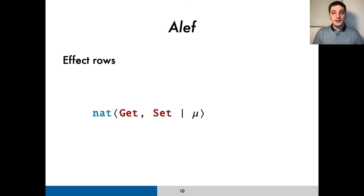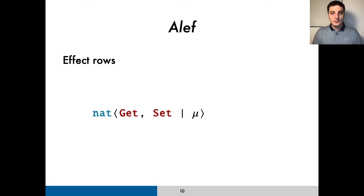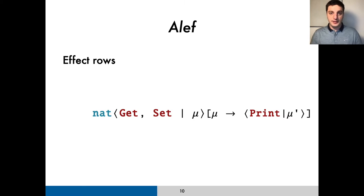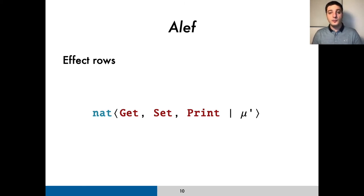For example, the type of a computation returning natural numbers that may invoke the state operations is the following. Here, mu is an effect variable that represents the ambient effects. Each effect row ends in an effect variable that can be instantiated in order to add operations to the row. For instance, if we wanted to add the print operation to this type row, we would need to apply an instantiation like the following one, where we are substituting the effect variable mu by a new row that contains the print operation. In Aleph, the order of operations in a row is irrelevant, and an operation cannot appear in a row more than once.